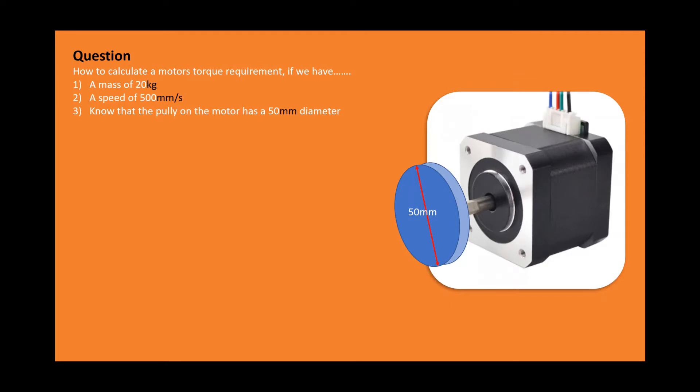Welcome back to another episode of Engineering How, where we're going to learn how to calculate a motor's torque requirement. We have: one, the mass, which in this case is 20 kilograms; two, the speed at which we're moving this 20 kilogram mass; and three, the pulley diameter on the end of the motor, which in this case is 50 millimeters.